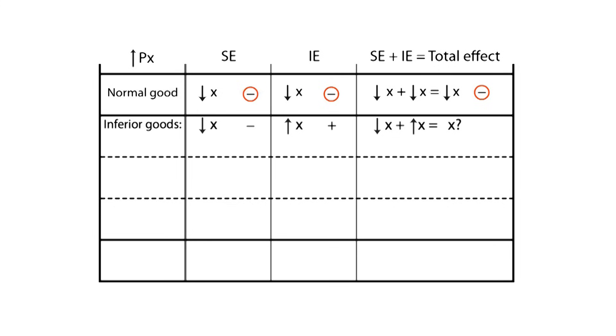For inferior goods, the substitution effect will be negative while having a positive income effect. Therefore, an analysis for this type of goods may be a little tricky, since the total effect will depend on which effect has a bigger absolute value. In those cases where the absolute value of the substitution effect is greater—this is when the negative effect more than offsets the positive effect—the total effect will be negative.